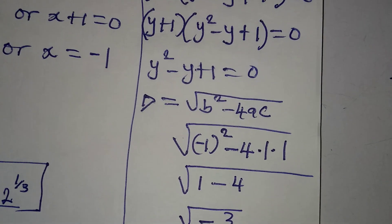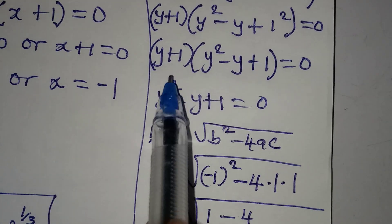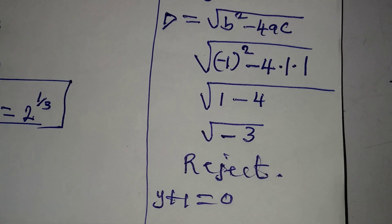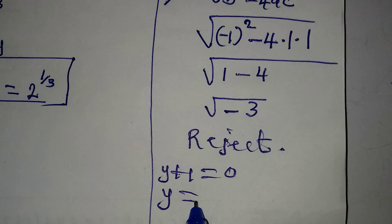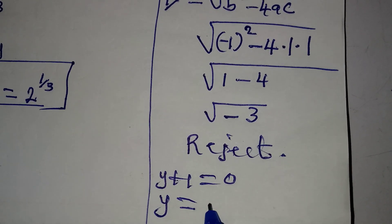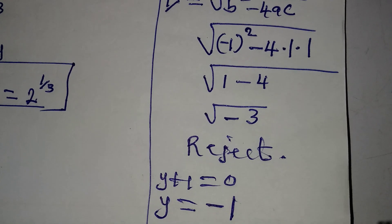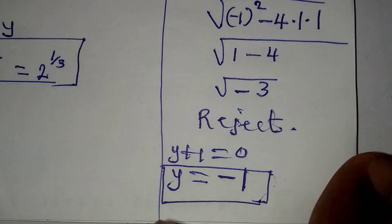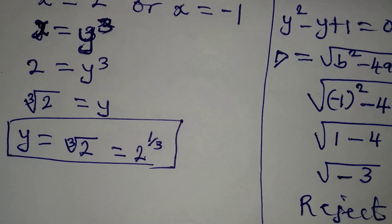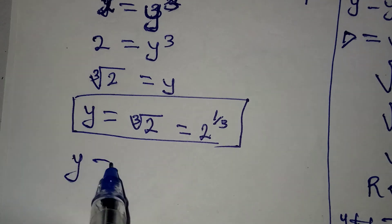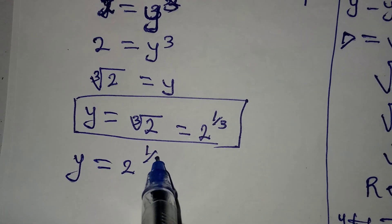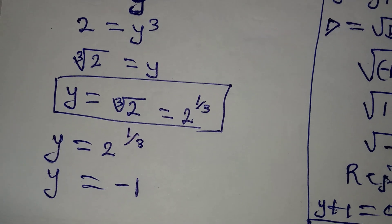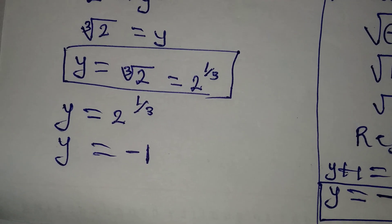Now from the second factor y plus 1 equals 0, which means y equals negative 1. This becomes another real solution to the equation. Bringing the two solutions together: y equals 2 to the power of 1 over 3, and y equals minus 1. These are the two real solutions for the equation. Thank you for watching.